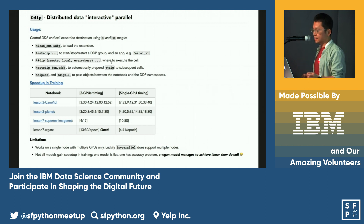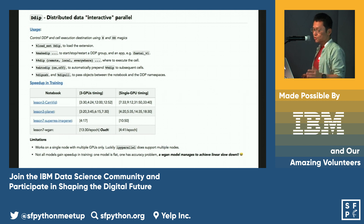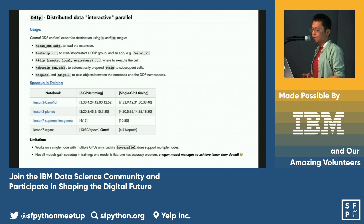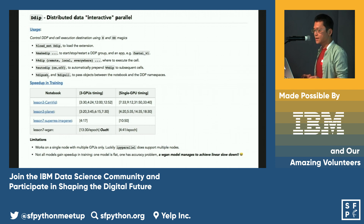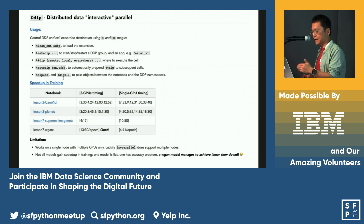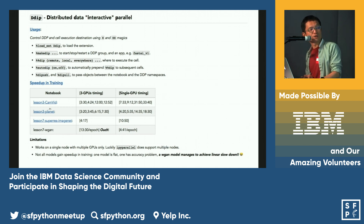The basic commands are pretty simple: creating the DDP group and then designating where to run the cell. As programmers we prefer to be lazy, so if you want to run everything subsequently on the remote cluster you can just say 'auto-ddp on' and 'auto-ddp off'. If you want to move data you can do 'ddp push' or 'ddp pull'. These numbers are from Fast.AI lesson notebooks.